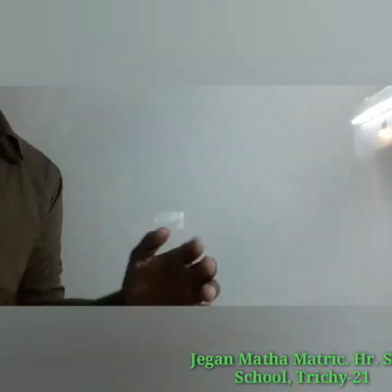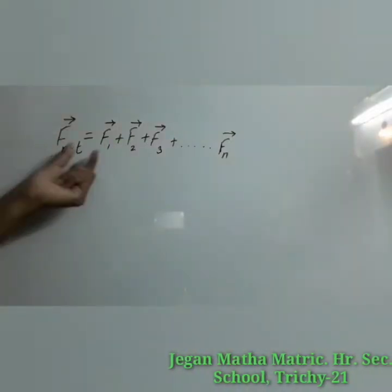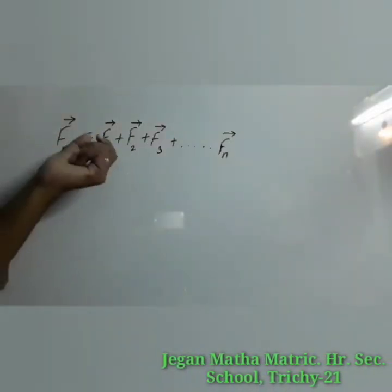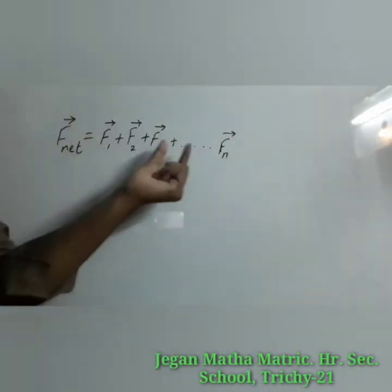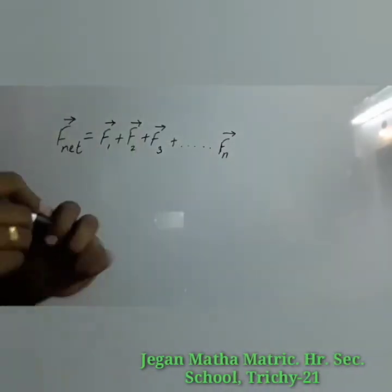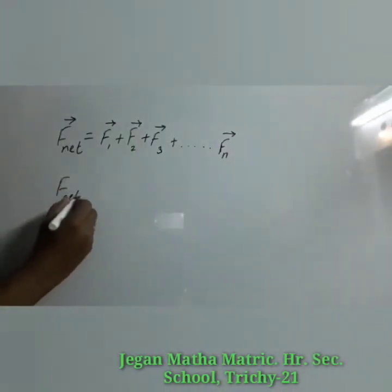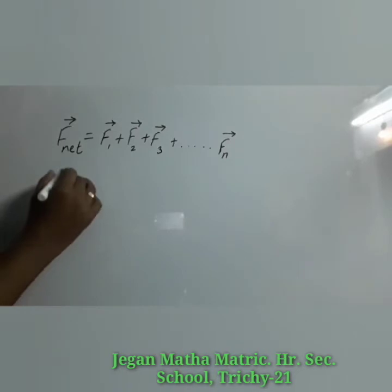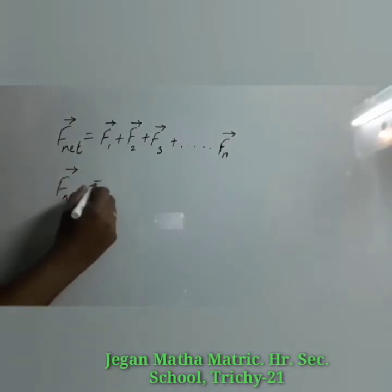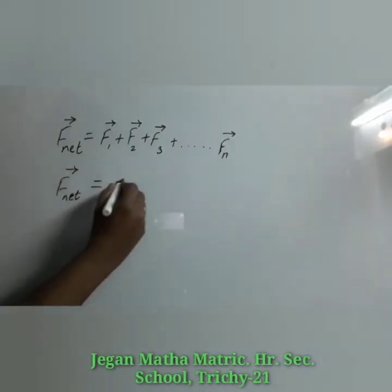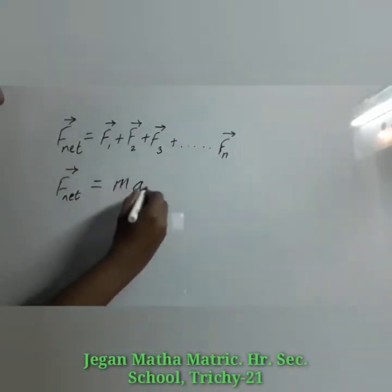If multiple forces act on the same body, then the total force is equivalent to the vectorial sum of the individual forces. So net force equals the addition of individual forces acting on the object, and it can be written as net force = m·a vector.